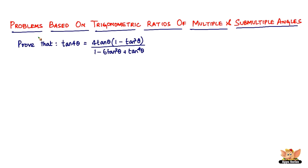In this video, let us continue to solve more problems based on trigonometric ratios of multiple and sub-multiple angles. We've got a question here which reads: prove that tan(4θ) equals 4 tan θ times (1 minus tan² θ), the whole divided by (1 minus 6 tan² θ plus tan⁴ θ).